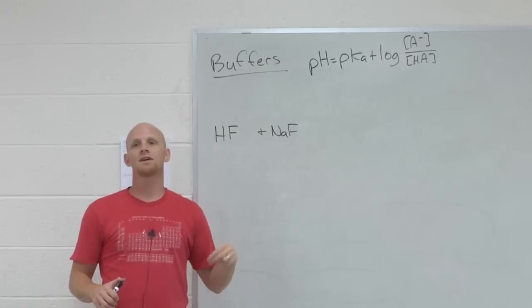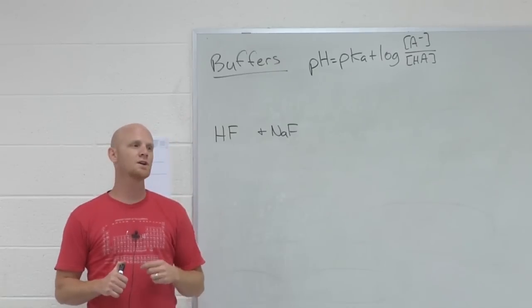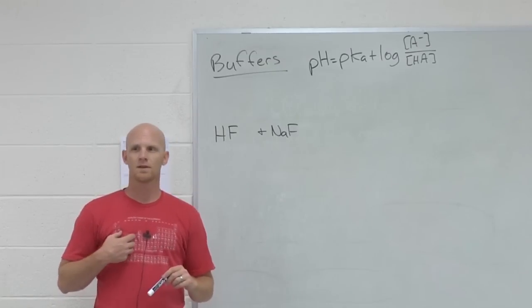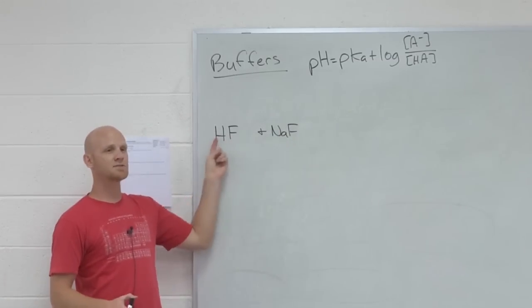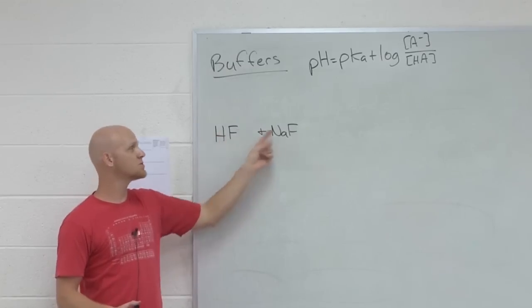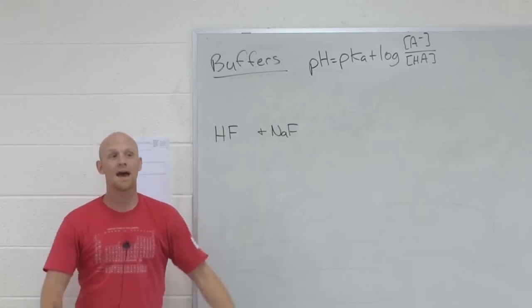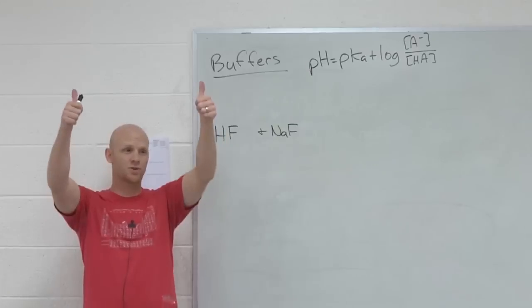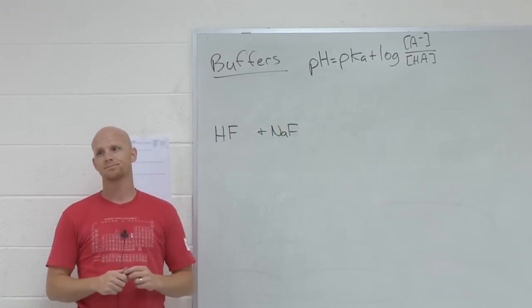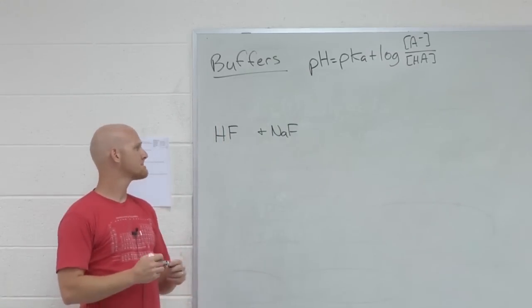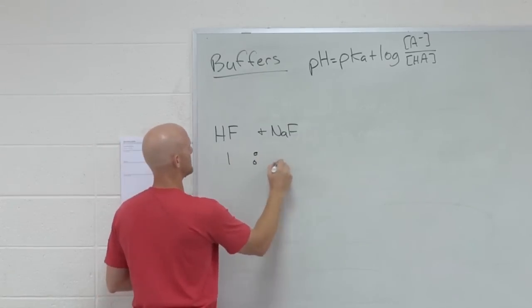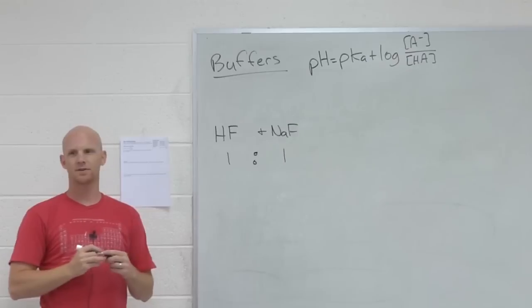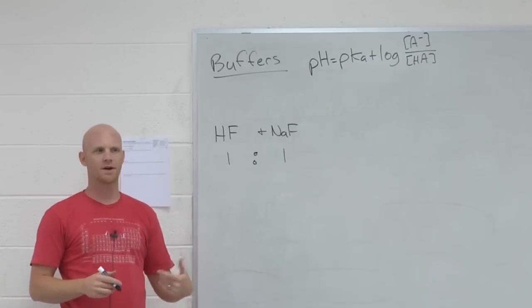So it's best if they're as close to a one-to-one ratio as possible. So a buffer is at its maximum buffering capacity when the weak acid and conjugate base concentrations are as close to each other as possible, one-to-one ratio, and as large, as high a concentrations as possible. So if I mix these one-to-one, that's a buffer. Or anything close to one-to-one. And the closer to one-to-one, the better.